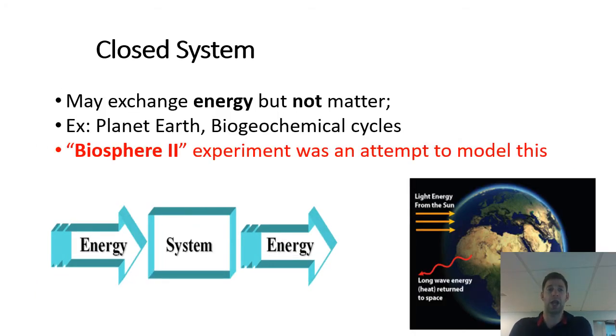Closed system is going to exchange energy, but not matter. The best example of this is planet Earth. We get energy from the sun and energy in the form of heat leaves the planet, but materials do not enter or leave our planet. All the materials that are on planet Earth, all the water, all the carbon, all the minerals, they stay here on planet Earth. So because we exchange energy with outer space, but we do not exchange matter, that means that we're a closed system. Technically, when an asteroid or comet hits the Earth, as they do from time to time, that would momentarily make the Earth an open system. But I would think of the Earth 99% of the time as a closed system, not exchanging matter with outside forces.